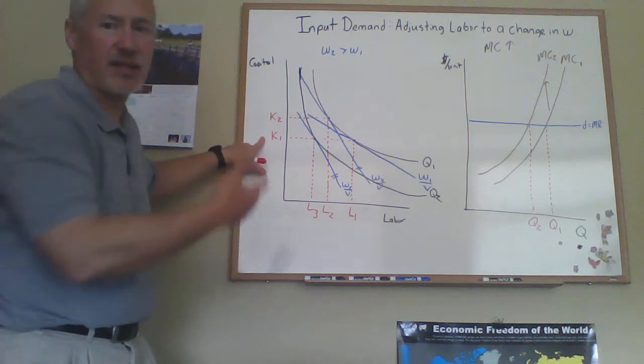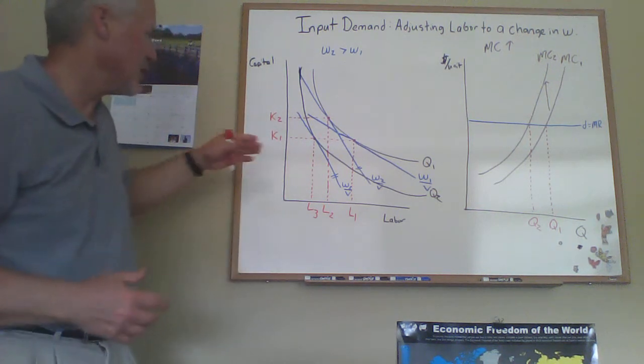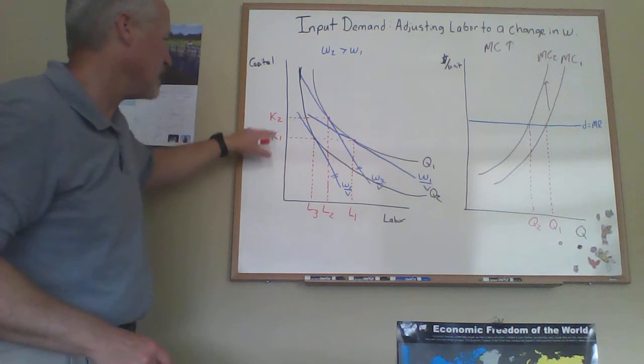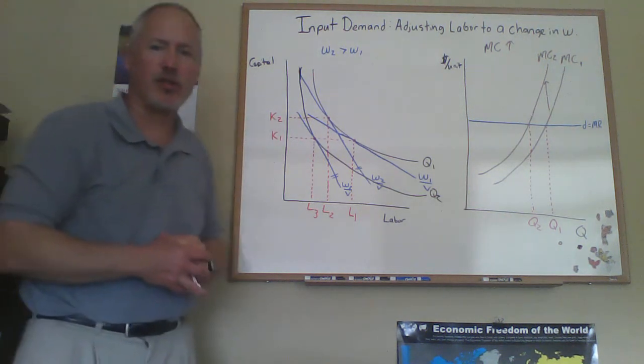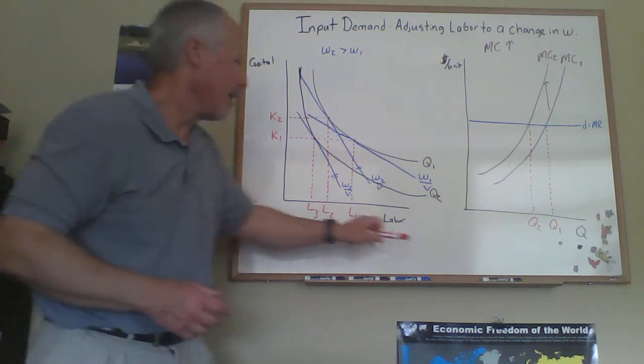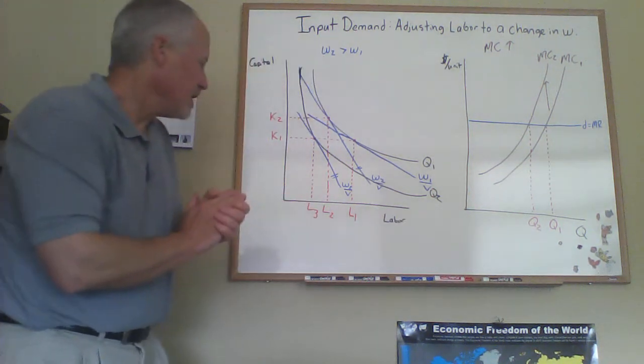And I'll label that L3. It looks like from that tangency point, I might have drawn this so I lined up like Q1 is the amount of capital they want to produce. If that is, that's just an accident. That just happened to be how I drew it there. There's nothing, that wouldn't have to necessarily be the case. The amount of capital you use can be a little bit higher or lower than it was originally.